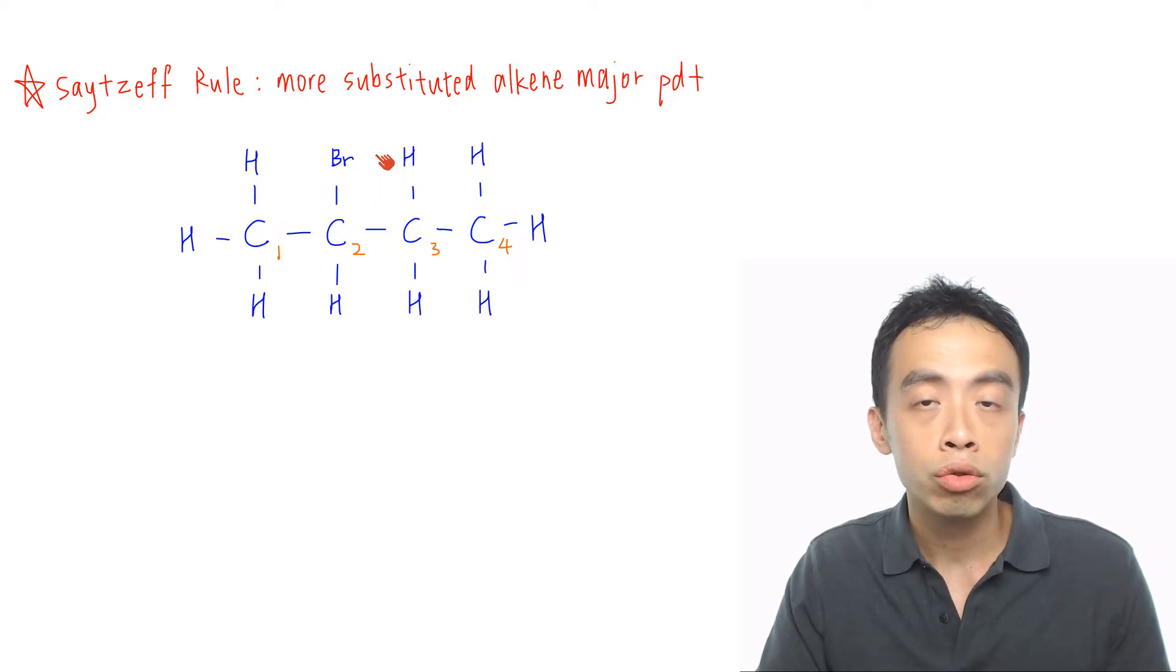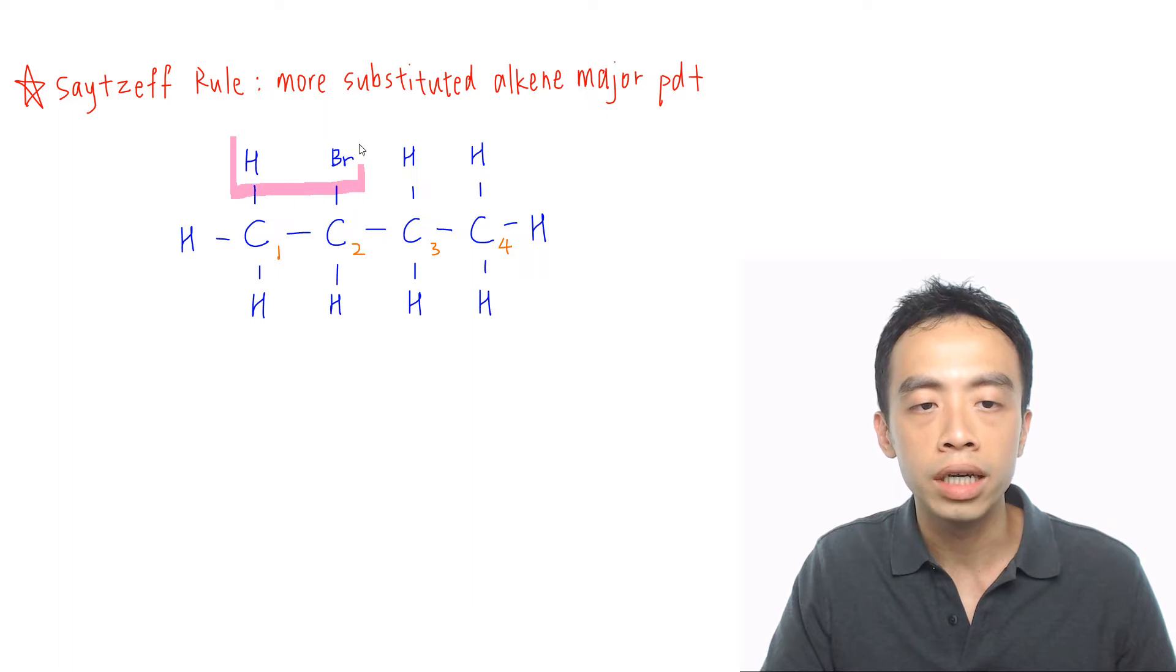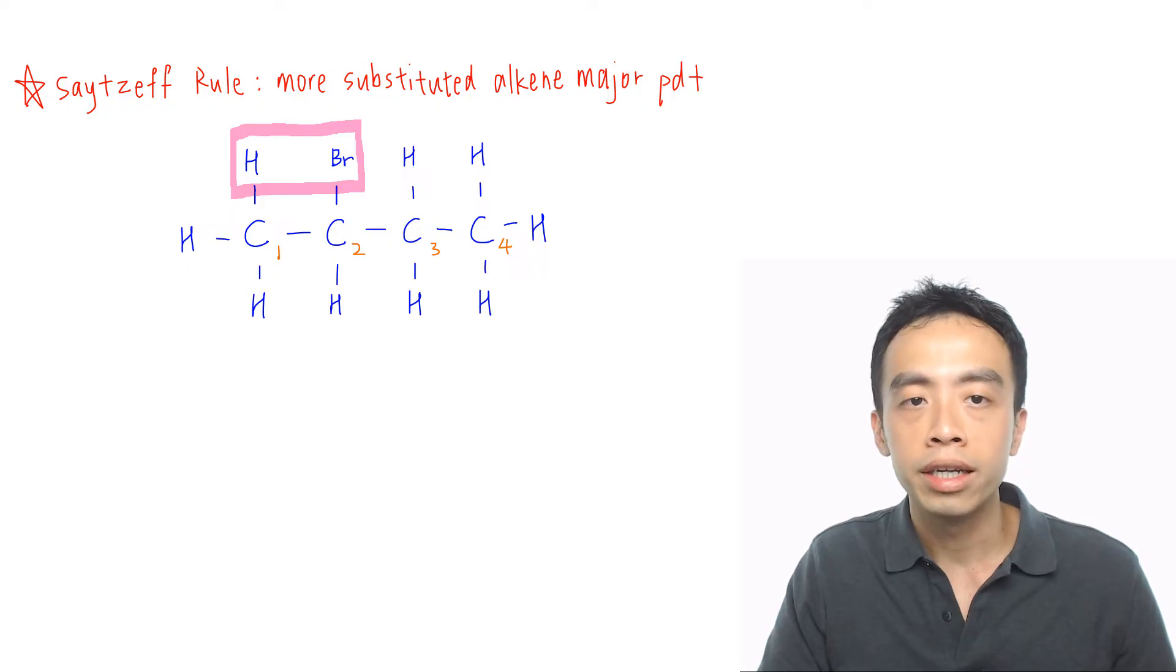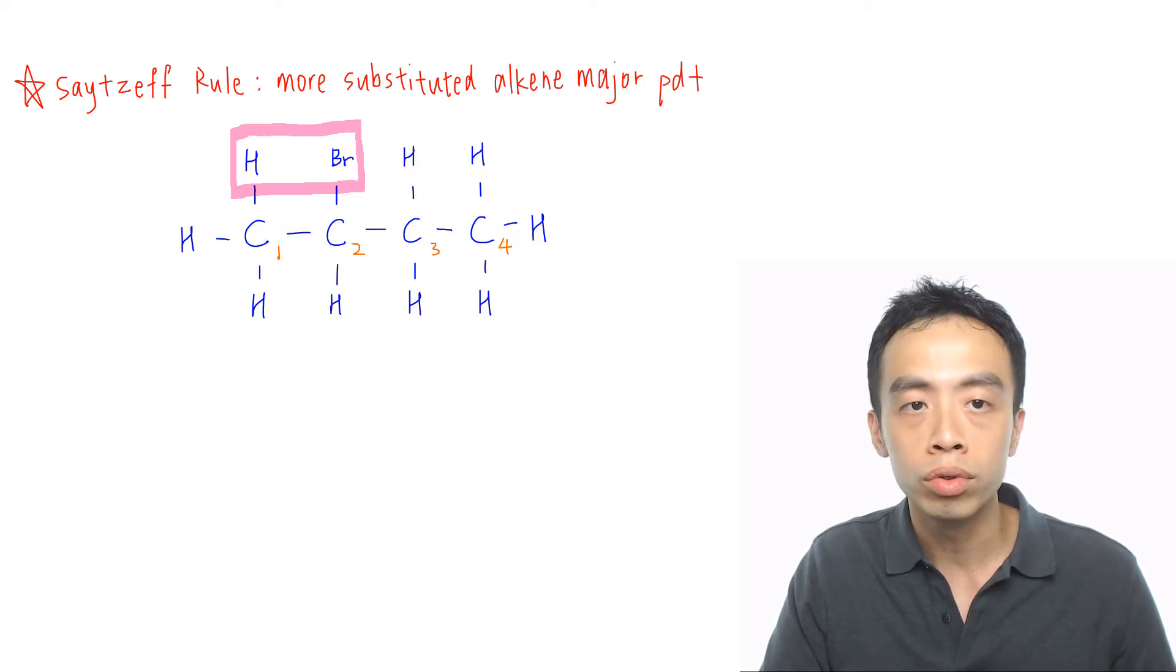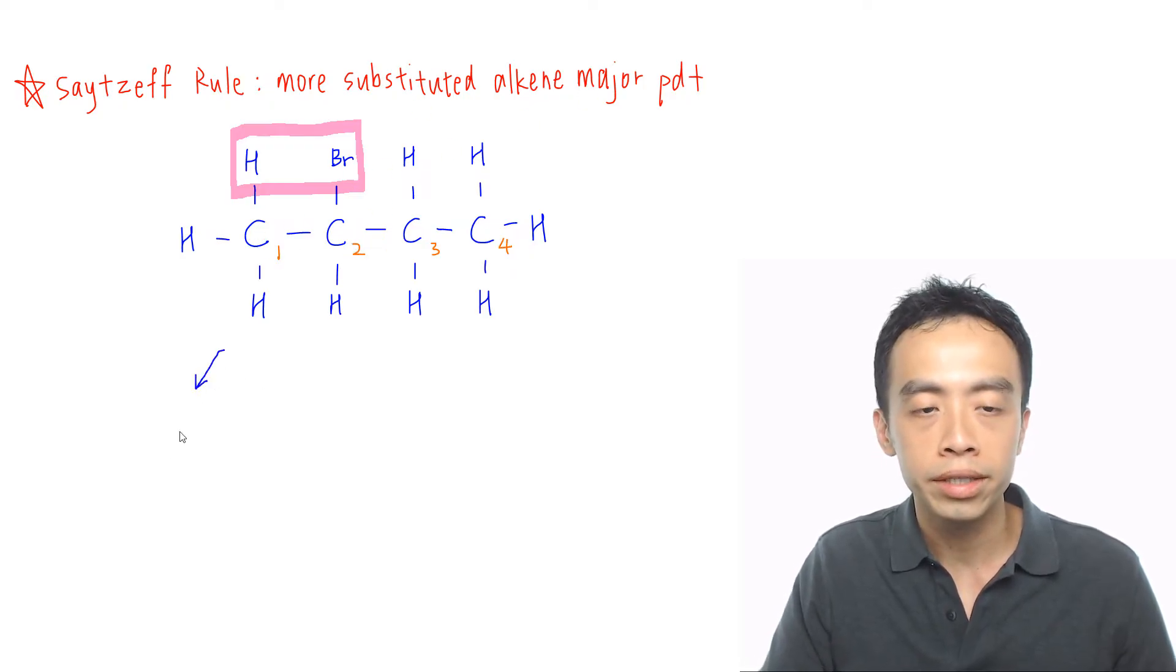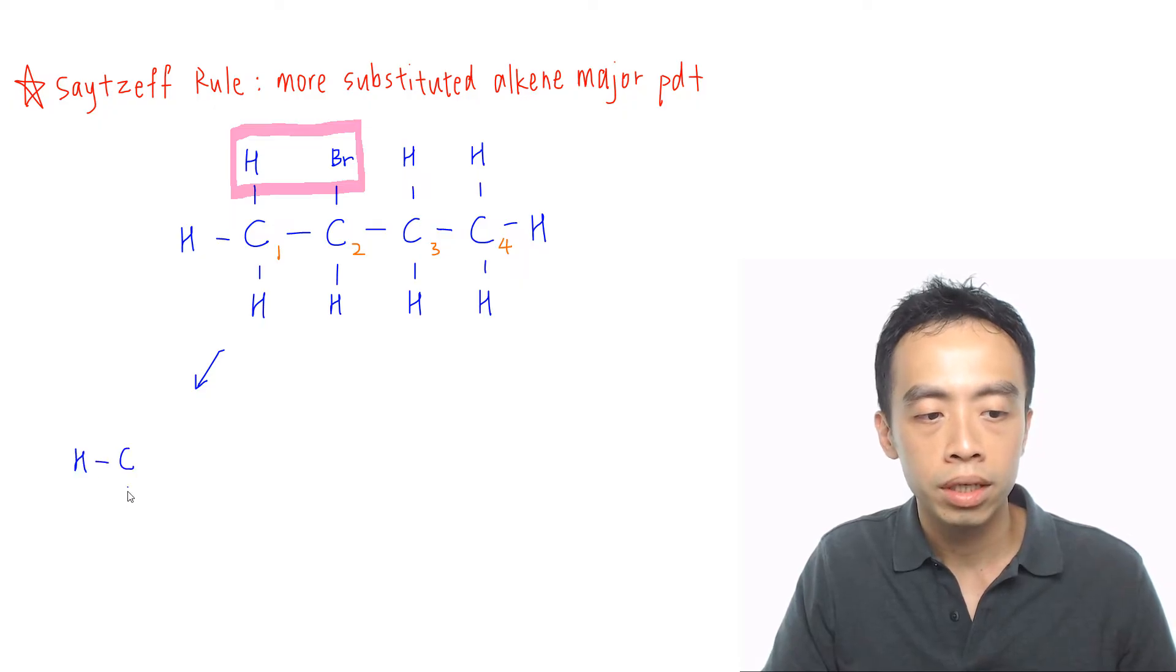So let's try to draw these two products. Now the first product that can be formed is if the bromine is eliminated together with my hydrogen in position one. So I box this up and when I take away this HBr, then later the double bond will be between carbon one and carbon two. So my product will look something like this. My carbon one will be here, then I have a double bond between carbons one and two. This will be a CH.